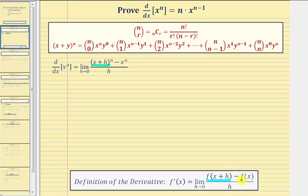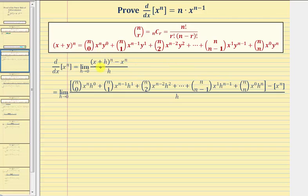And then we have minus f of x, which in our case is x to the nth, all divided by h. Now we use the binomial theorem to expand the quantity x plus h raised to the nth. In our next step, this looks a little intimidating, but all of this is the expansion of the quantity x plus h raised to the nth.